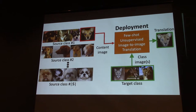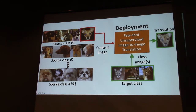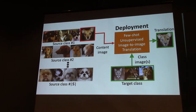At test time, when given unseen target class images, the model — having been prepared to extract important characteristics from a few example images through training — can extract those characteristics and transfer a dog to a new breed like a mountain lion. It's more like a human: if you only see one kind of animal you can't do well for others, but when you go to a zoo and see many different animals, you gain more experience and can generalize.